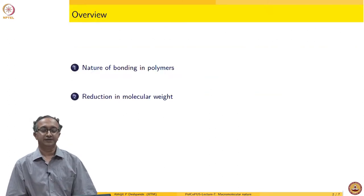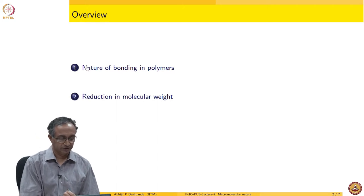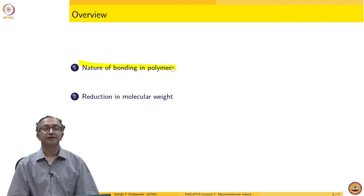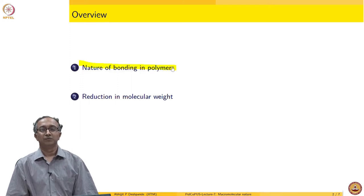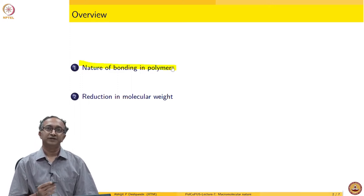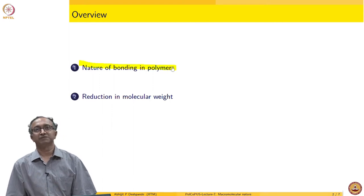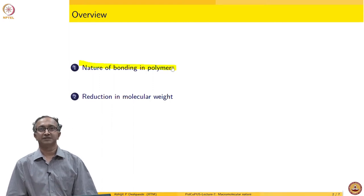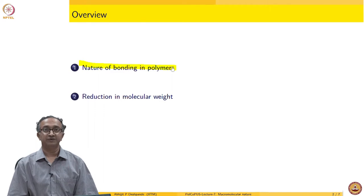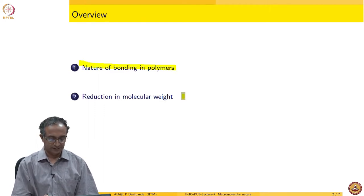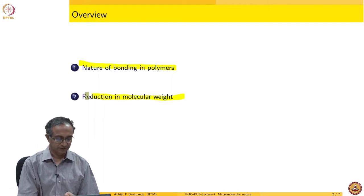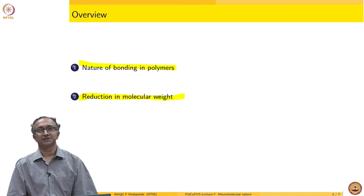We will do this by specifically looking at and thinking about what is the nature of bonding in polymers — what do we mean by the types of bonds present in polymers as compared to some of the other materials that we know of. The other thing we will do is think in terms of reduction in molar mass.